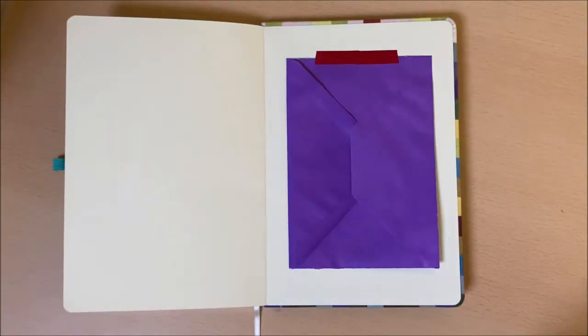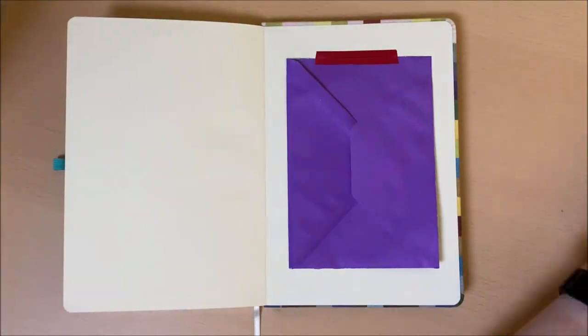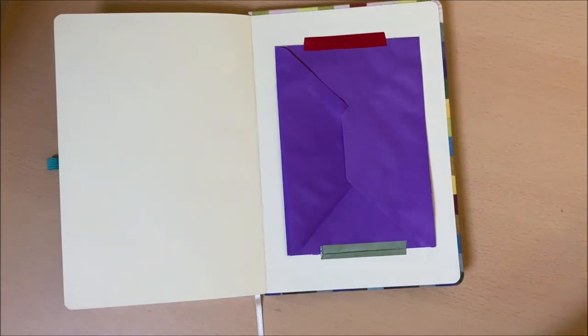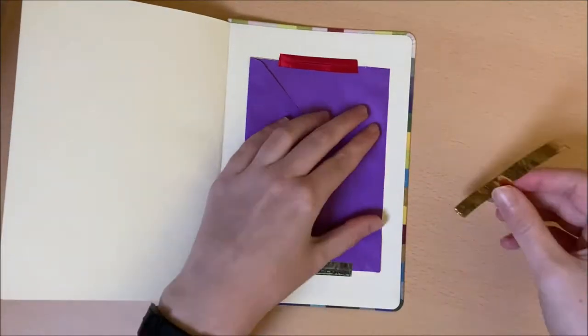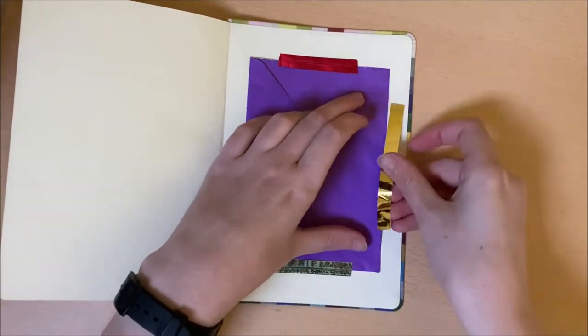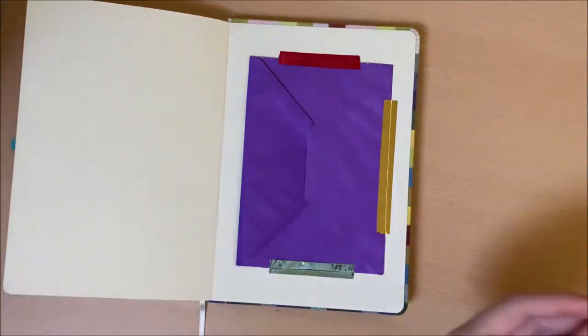Next I always add a small envelope to the back page of a journal. This is super helpful when it comes to storing small pieces of paper or sticky notes as well as just ordinary notes that you don't want to use in your journal but want to make a note of somewhere.